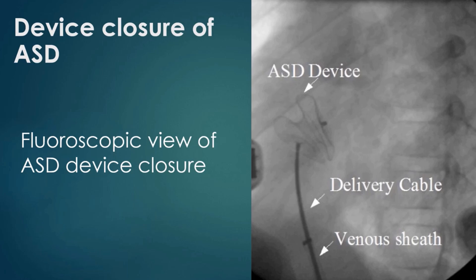It is ideal to have TEE guidance during the procedure as well. This is the fluoroscopic image of an ASD device being delivered using a delivery cable introduced through a femoral sheath. Once the device reaches the left atrium, the left atrial disc is released first and brought in contact with the left atrial side of the ASD. When the position is just ideal, the right atrial disc is allowed to form by withdrawal of the sheath. Once the two discs are in position with the waist across the ASD, slight wiggling is done to ensure the device fits perfectly with no tendency for dislodgement. Position is confirmed by transesophageal echo, with special care to see that the device does not interfere with the functioning of the atrioventricular valves. Once everything is fine, the device is released by unscrewing the delivery cable.